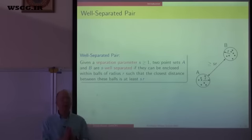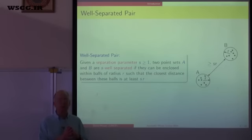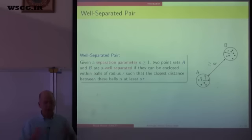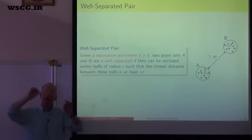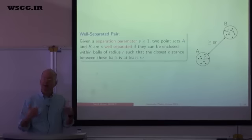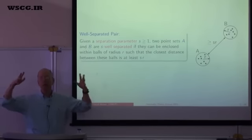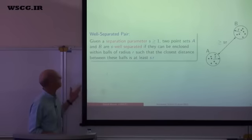The well-separated pair decomposition was an idea that did not originally come from computational geometry and theoretical computer science. It actually arose out of computational physics. For those of you who have studied the fast multipole method — the FMM — this is a technique used in physics to process interactions between large systems involving pairs of objects. If I have N particles in a system, there are N² pairs that could interact. The idea behind the fast multipole method was to reduce from N² down to just N things to be considered, and this idea was picked up in computational geometry as the well-separated pair decomposition.